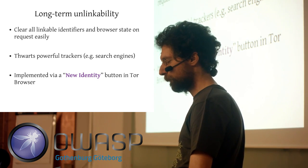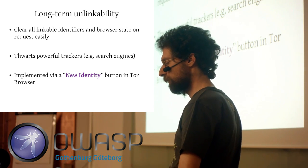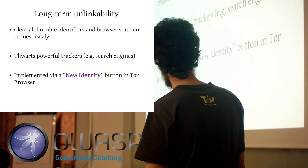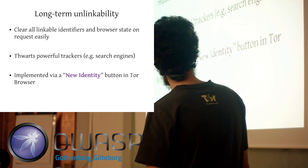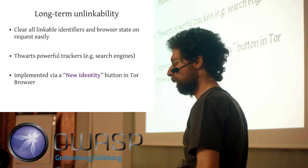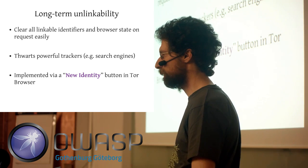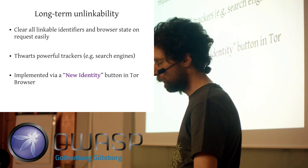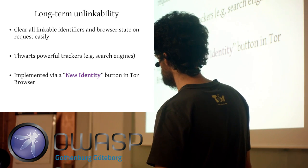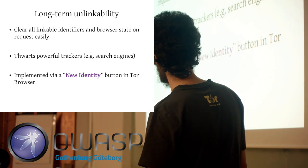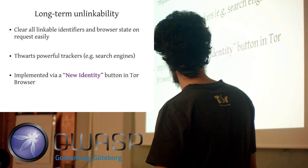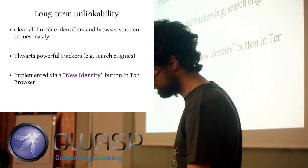To tackle this issue we want to address long-term unlinkability via a button called the New Identity Button. What the New Identity Button in Tor Browser does is clear all linkable identifiers and browser state easily, giving you a clean blank slate. It also gives you a new Tor circuit, meaning with high probability a new exit node, so that even Google can't correlate things anymore based on IP address or other things.